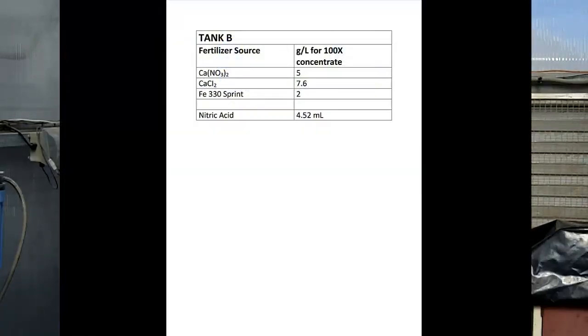Tank B is where we keep our calcium, and keep our calcium separate from our tank. And we're adding calcium nitrate, which gives us a calcium source and a nitrate source. And we're adding calcium nitrate at 5 grams per liter. And then we add calcium chloride. That helps make up the calcium we need without adding additional nitrate. We add that at 7.6 grams per liter.